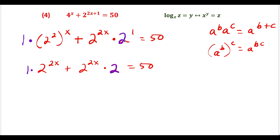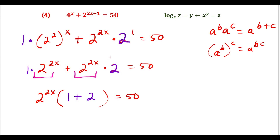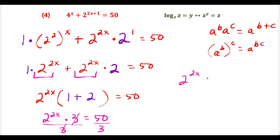You can see a common factor of 2 to the 2x. We write 2 to the 2x outside, and the leftovers are 1 plus 2, giving us 2 to the 2x times 3 equals 50. Divide both sides by 3: 2 to the 2x equals 50 over 3. This will be a repeating decimal so we'll leave it as a fraction. Now we use the exponent-to-log form conversion: rewrite as log base 2 of 50 over 3 equals 2x.